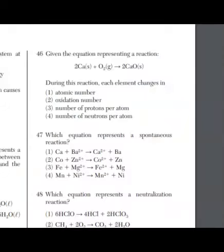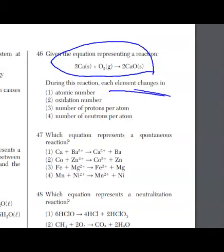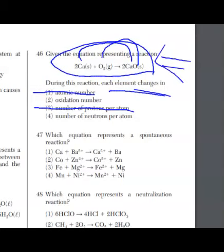Question 46, you're given a balanced reaction. And you're told during the reaction, each element changes in. Let's just run through the choices. Atomic number, that's your number of protons that gives an element its identity. I'm starting with calcium, and I'm ending with calcium. I'm starting with oxygen, and I'm ending with oxygen. This is not a nuclear reaction. This is a chemical reaction. The proton number can't be the answer. That means number of protons can't be the answer as well. Number of neutrons. When it comes to a reaction, if the neutrons were changing, then you would see mass numbers as part of the equation. That's not the case here. They're not changing as well. It's got to be oxidation number.